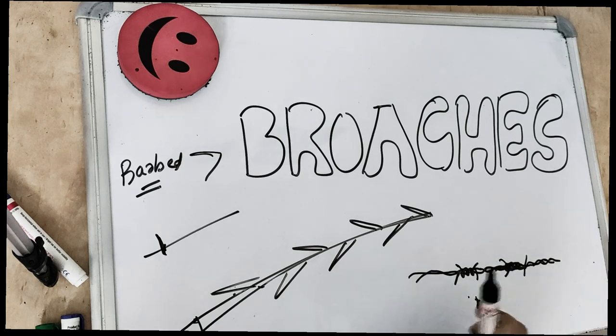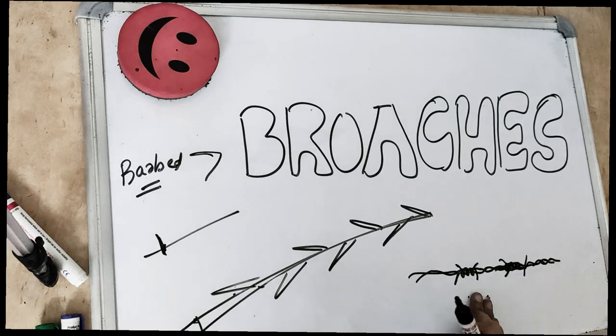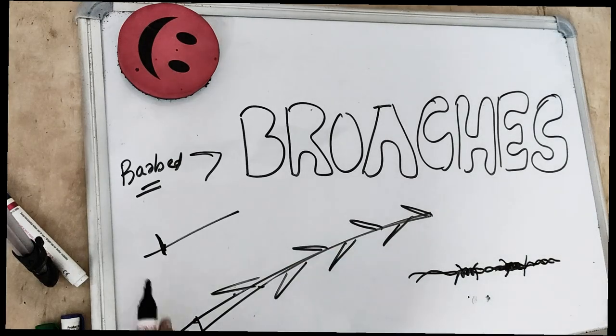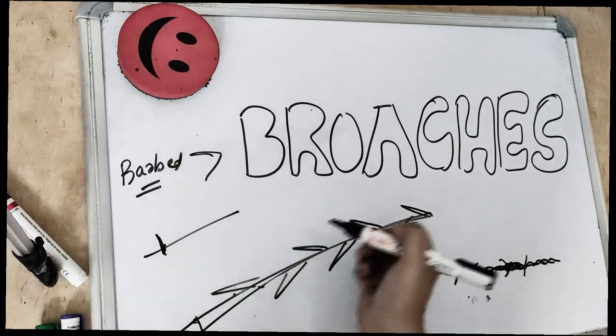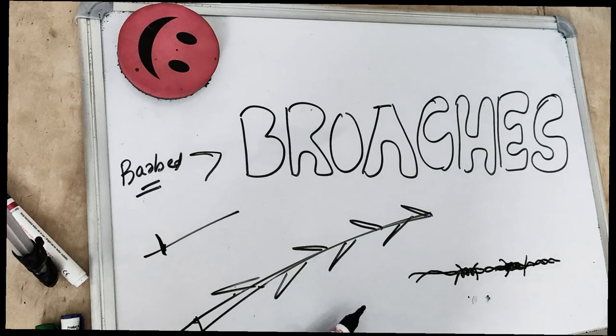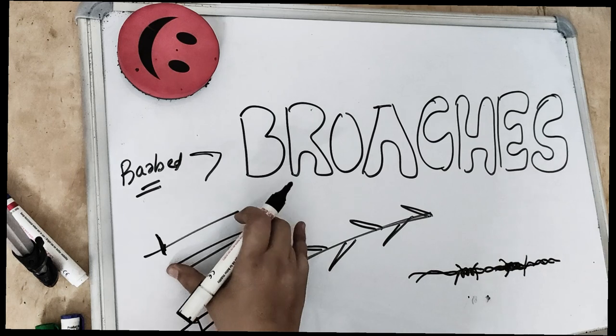So these are like fences. So these barbed broaches, we have files which are like these barbs. So we have spikes on the files also. So we have two kinds of broaches which are the barbed broaches and one with the smooth broaches without any barbs.